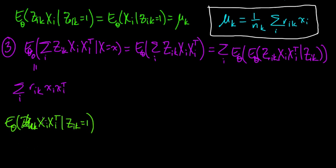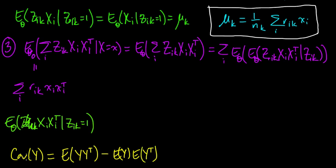What is the conditional expectation of this xi xi transpose? If you know your covariance matrices, then you recognize—this is an aside. For any random vector y, the covariance matrix of y equals the expected value of y y transpose minus the expected value of y times the expected value of y transpose. This follows by the definition of the covariance matrix.